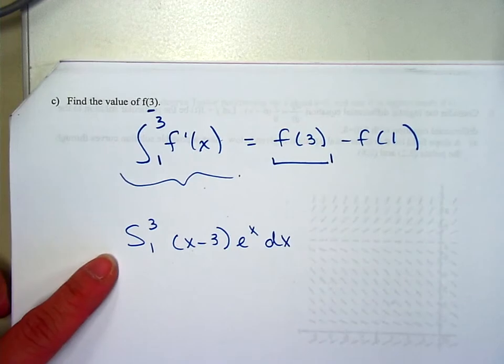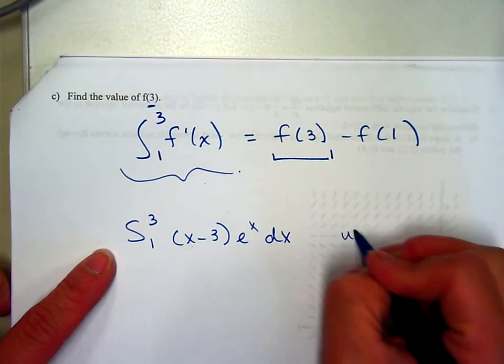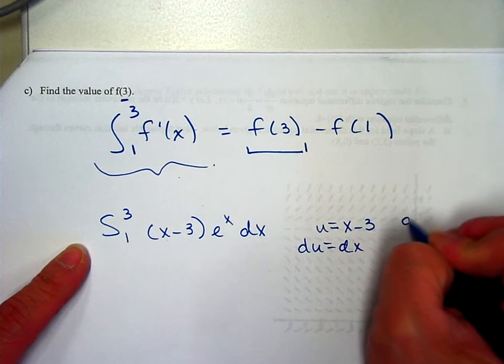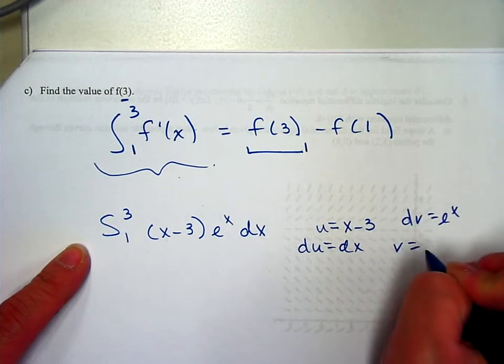How are we going to integrate this by hand? This is your integration by parts. u is x minus 3, du is dx, dv is e to the x, v is e to the x.